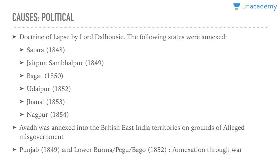Under the Doctrine of Lapse by Lord Dalhousie, the following states were annexed: Satara in 1848, Jatpur and Sambhalpur in 1849, Bagat in 1850, Udaipur — this is the one in Chhattisgarh, not Rajasthan — then Jhansi and Nagpur. Jhansi is the most famous case because of Rani Lakshmibai.